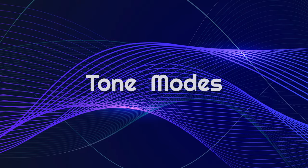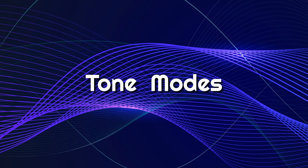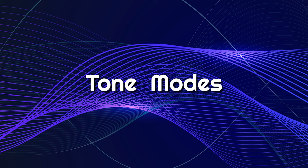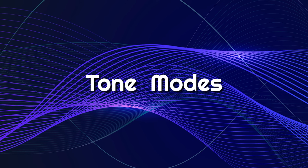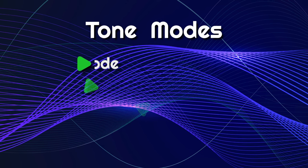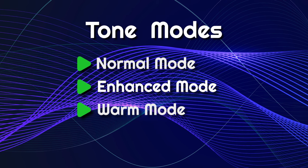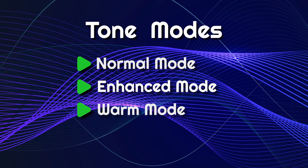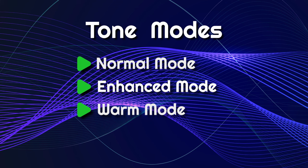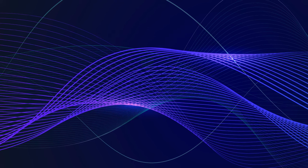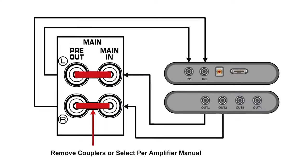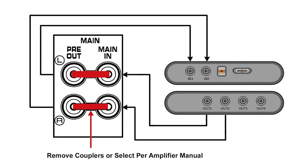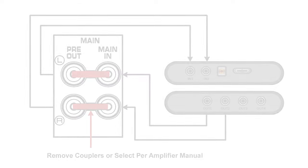The EQ901 Elite and EQ901 Platinum also include three other tone modes that can be used without a subwoofer. Normal mode is the most neutral. Enhanced mode provides a tighter sound. Warm mode adds mid-range with slight treble reduction. To allow tracking between the 901s and the subwoofer, it is required that the EQ901 unit be implemented in a pre-out main-end loop or between your pre-amplifier and power amplifier.